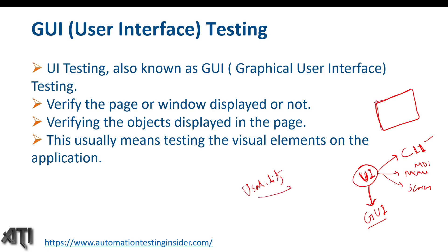Do not confuse usability testing with GUI testing — they are different. In GUI testing, we mainly talk about front-end testing. Usability testing talks about the overall functionality and how easy it is to use the application. GUI testing focuses on look and feel and whether all elements are present, without caring much about functionality.